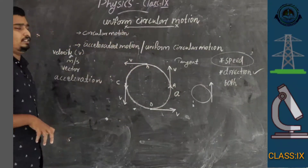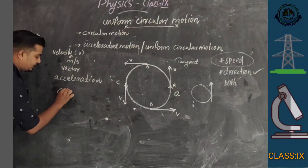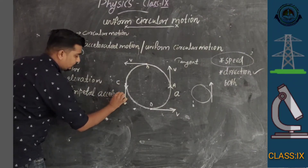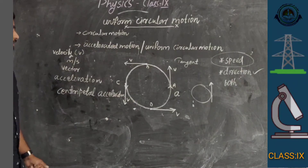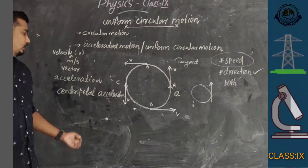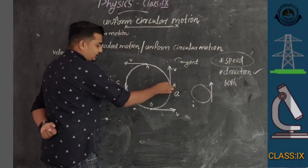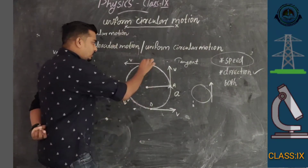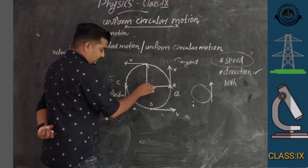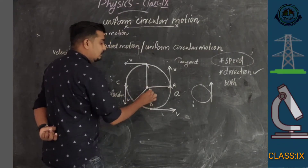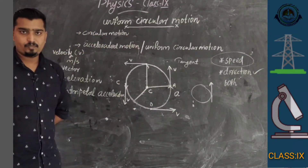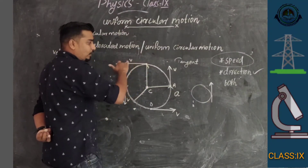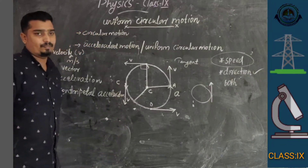The acceleration due to this circular motion is called centripetal acceleration. Centripetal acceleration is directed towards the center of the circular path. The direction of centripetal acceleration and the direction of velocity are mutually perpendicular.